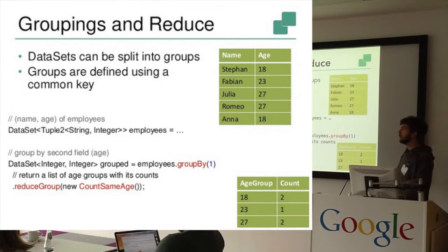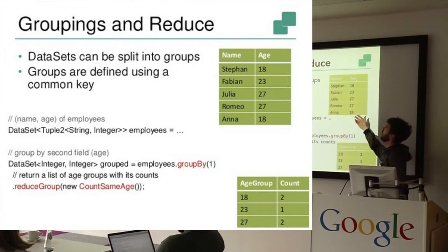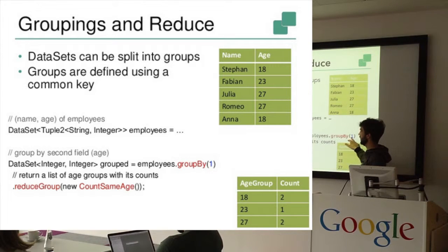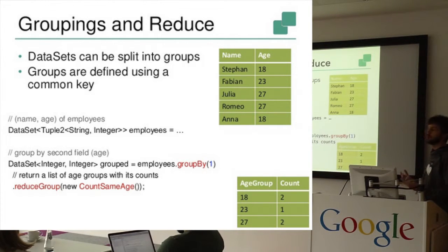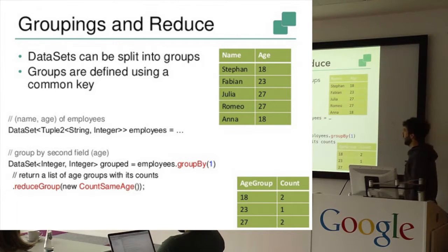Then we have groupings and reduce. Like we saw that already in the word count example, but I'm going to demonstrate here again to make it clear. So if we have, for example, a data set with a name and an age of a person, and then we can group by, for example, if we represent it as a tuple two of name and age, we can group by, for example, the age here, and reduce actually with this function count same age, which will give us a list of people who are in the same age group. So here we can see we have Julia and Romeo at same age, and actually Anna and Stefan are also in the same age, and so that's why the output here is 18.2 and 27.2.